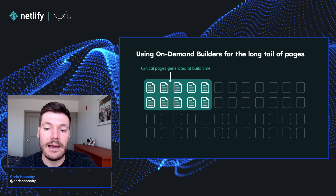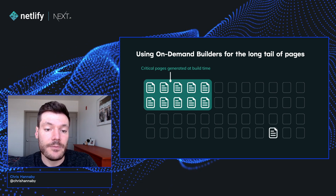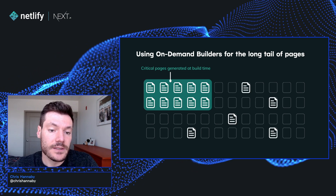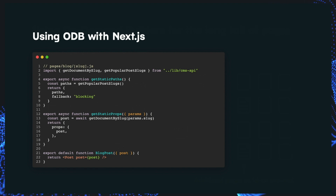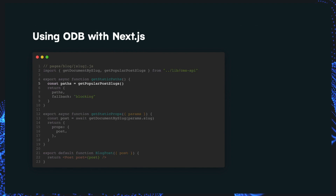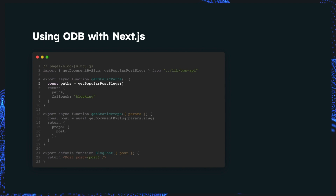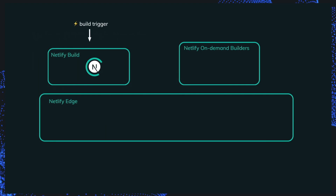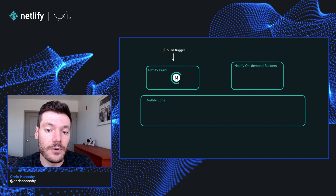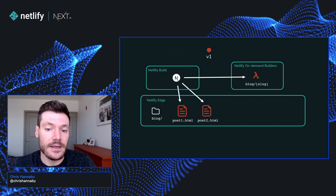On-Demand Builders allow us to generate certain critical pages in our main builds, and then we're able to defer other pages to be generated on-demand. To use On-Demand Builders with Next, we start using the same approach using getStaticProps and getStaticPaths. But now, we'll want to only return the subset of pages that we want to include in our main build from getStaticPaths. This might be some of our most popular pages, or could be our most recent posts — something you can completely customise yourself. We also want to change the fallback property from false to blocking.